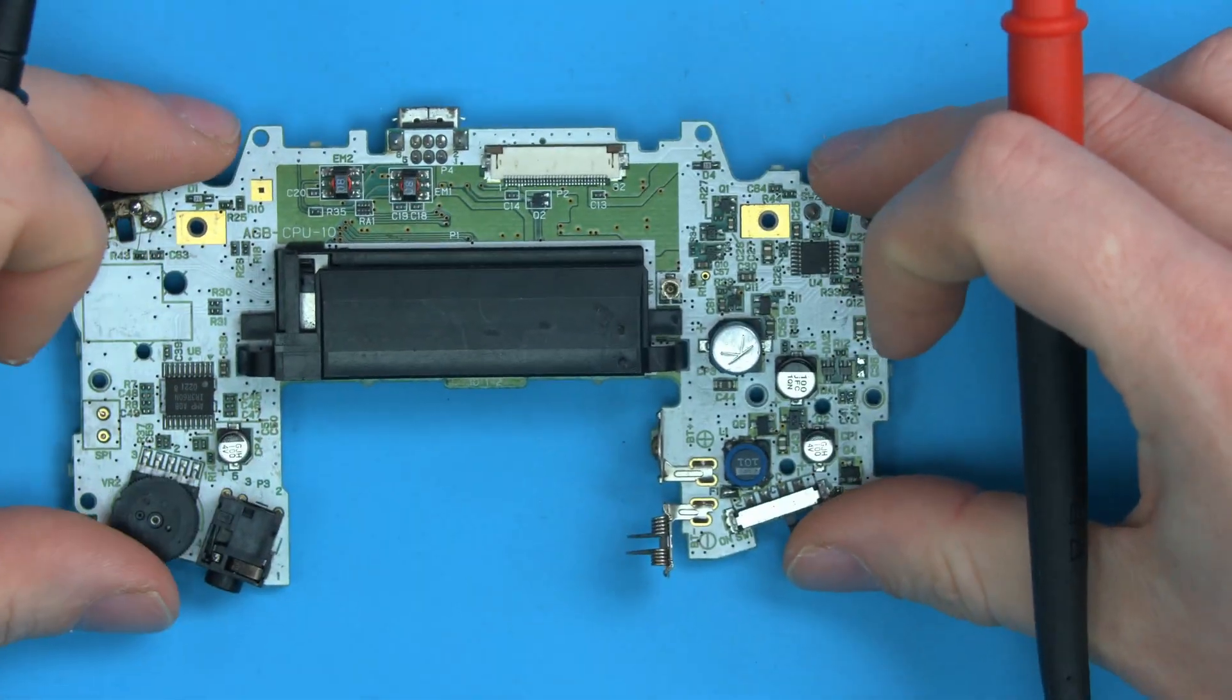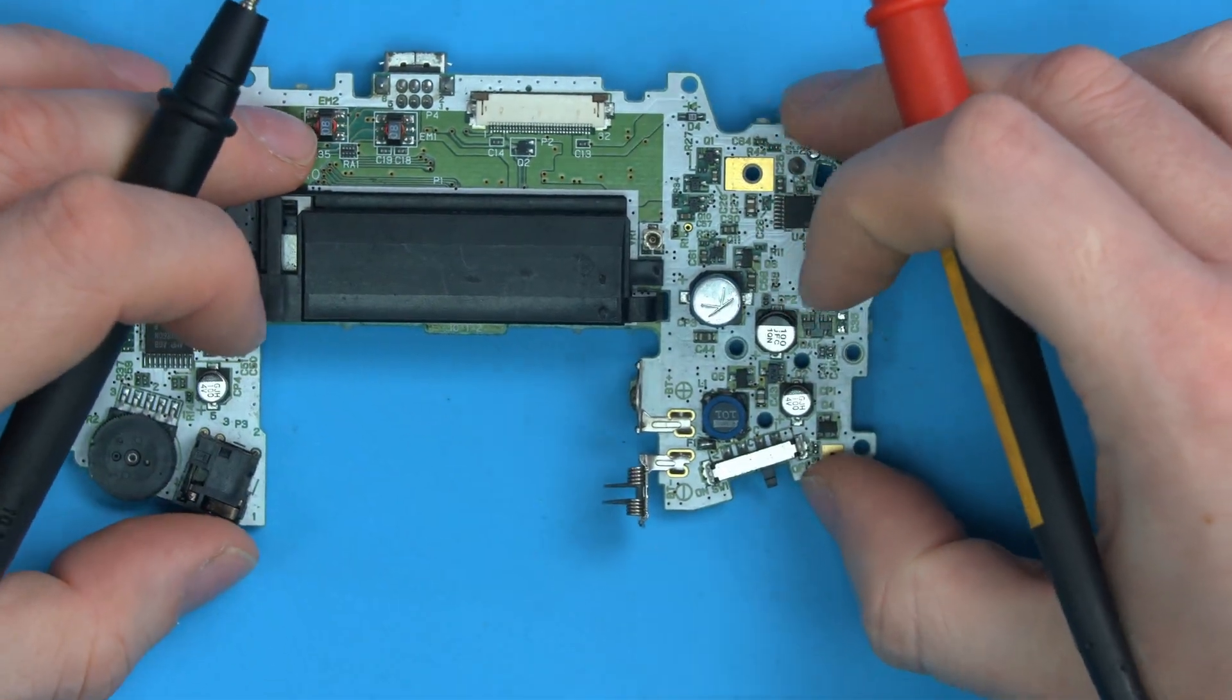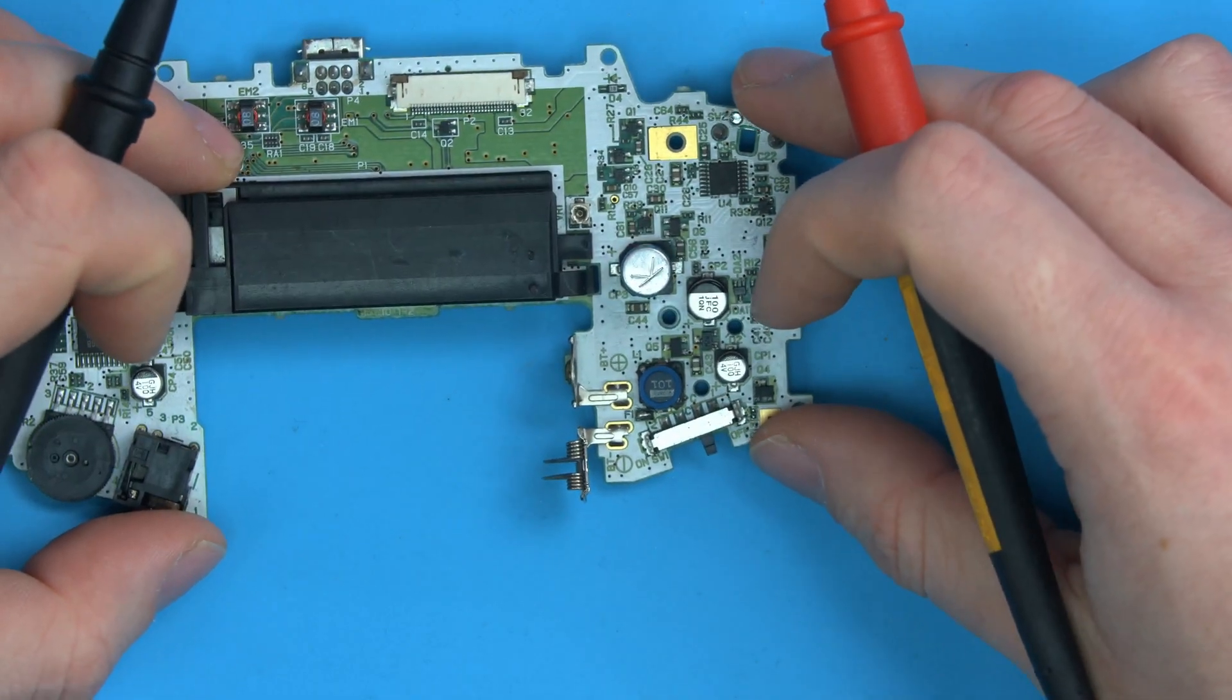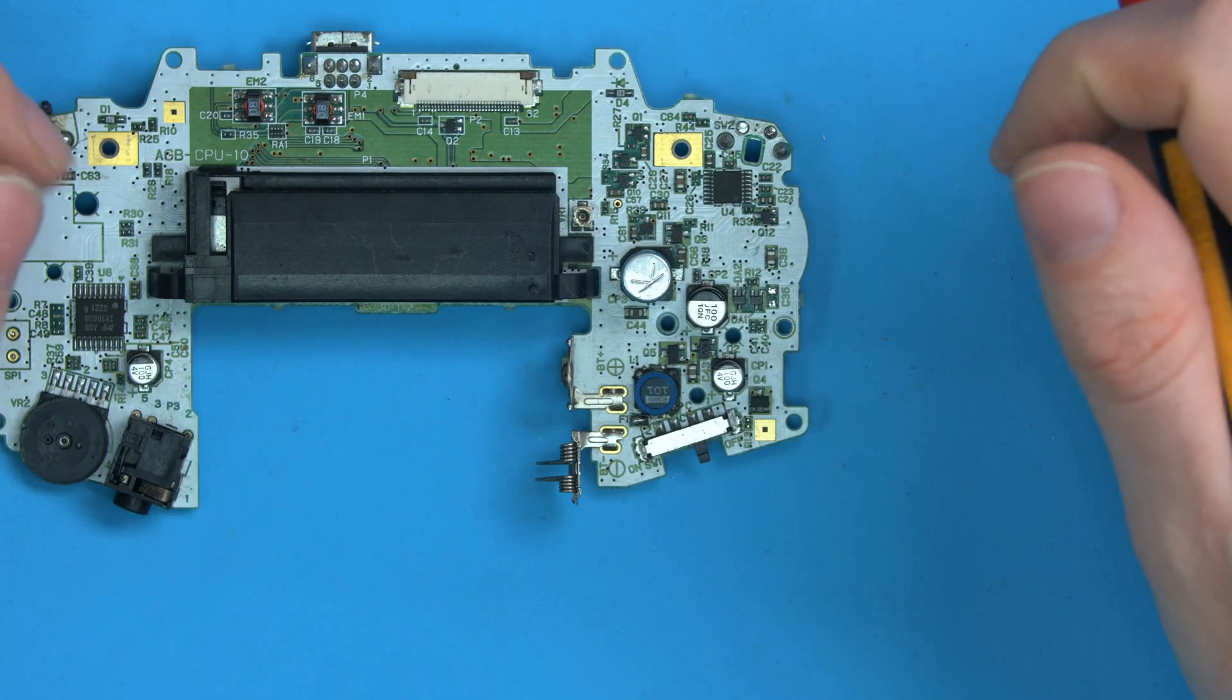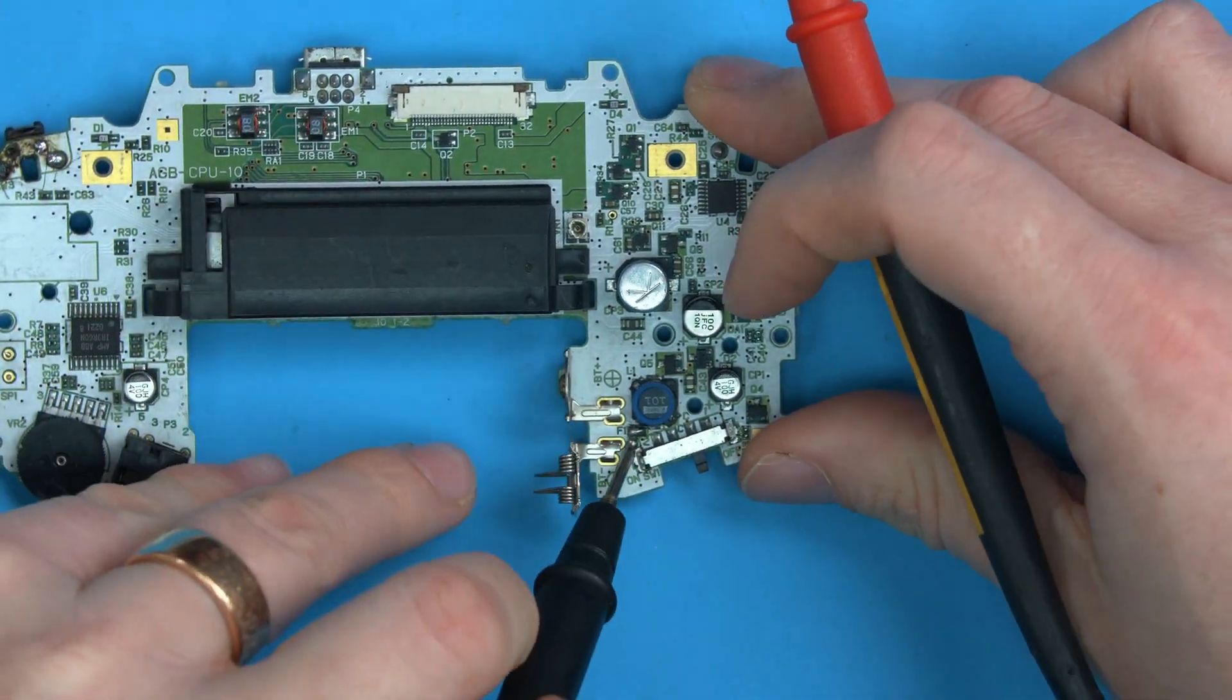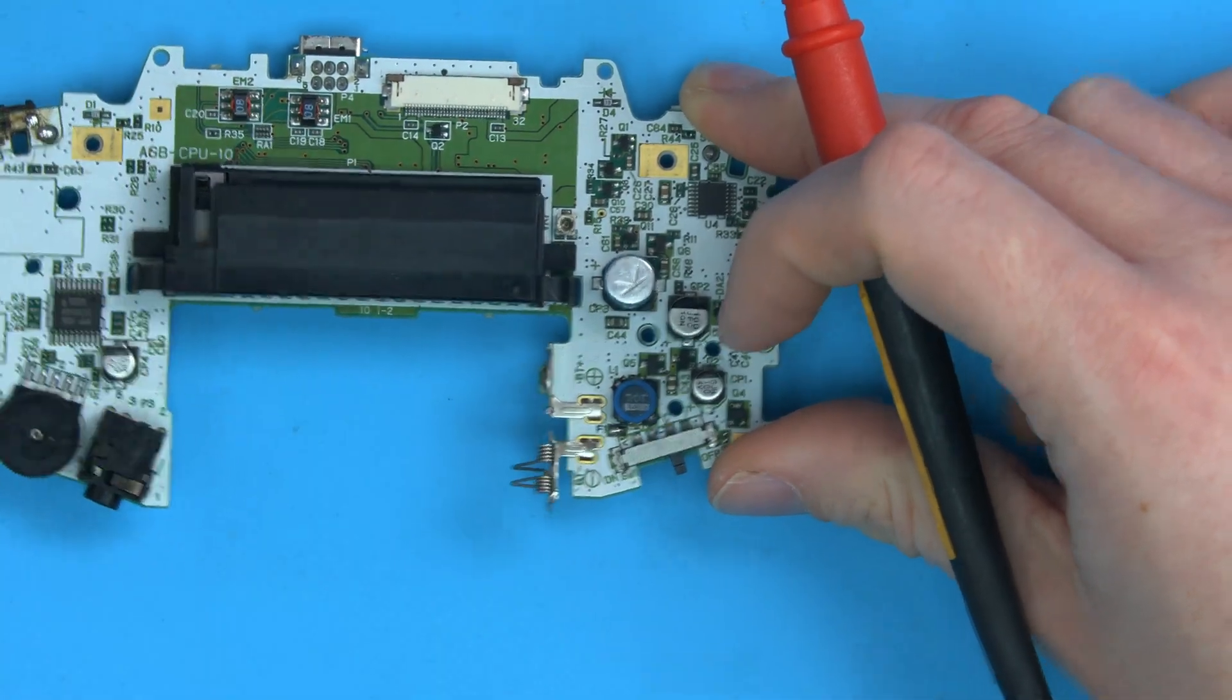It's a blown fuse normally or bad power getting into the system. So battery springs corroded. Basically, what you're checking for at the very start is power flow. Are you getting your voltage into your system? But before you get voltage, or depending on which way around you want to do it, you want to check if fuses are blown.